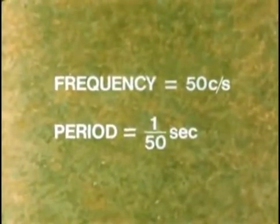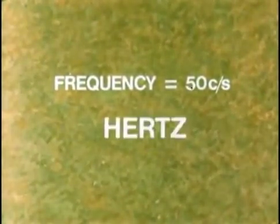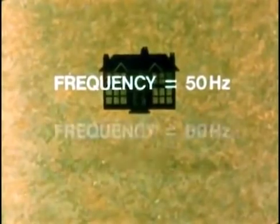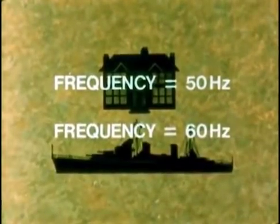Incidentally, instead of saying cycles per second, we use the name Hertz. In the United States, all electricity is generated at 60 Hertz. The AC supply in a ship is usually 60 Hertz, 60 cycles per second also.